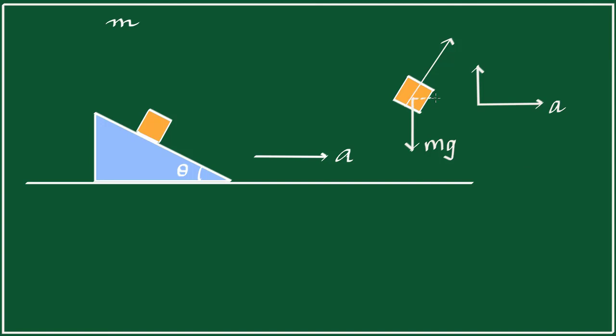So if I take the x-axis horizontally, mg has no component in the x direction. The normal reaction has got a component. Let's find out. This is the angle of the incline. This is theta. That is theta. And so this is 90 minus theta.